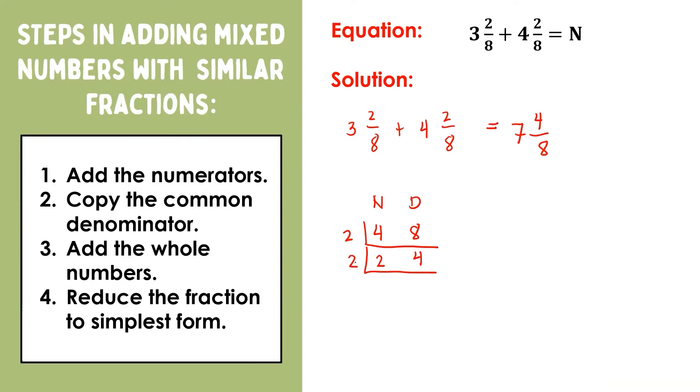So 2 ÷ 2 = 1, and 4 ÷ 2 = 2. This time, 1 and 2 have no common factor other than 1. Therefore, 4/8 is simplified as 1/2. Thus, the final answer is 7 1/2.